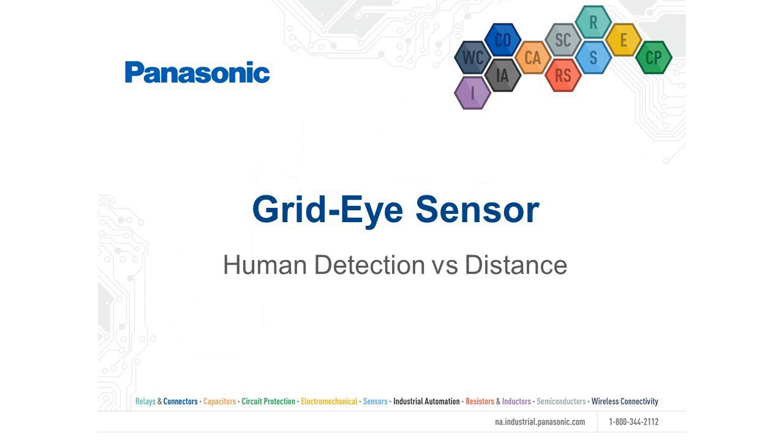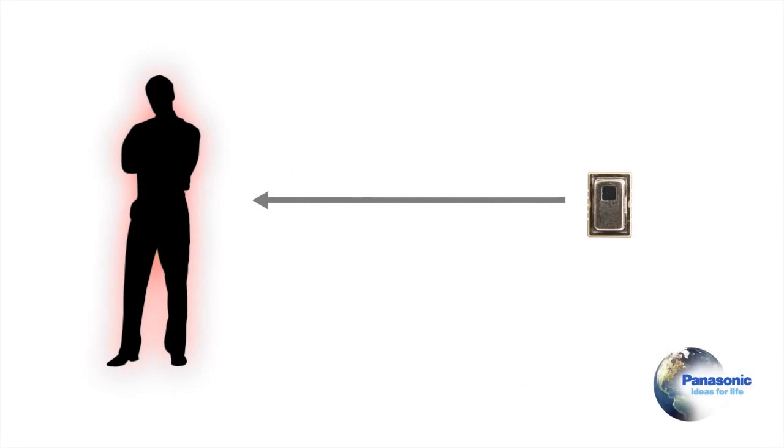Hello everyone, today we'll be discussing how to optimize the usage of the GridEye thermal array sensor by understanding how a human subject's heat signature varies depending on its distance from the sensor.